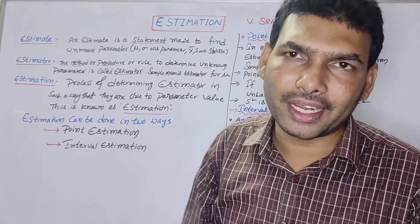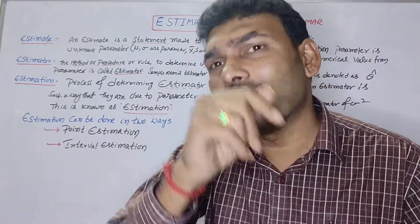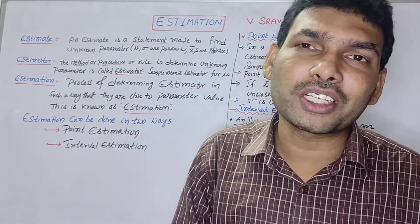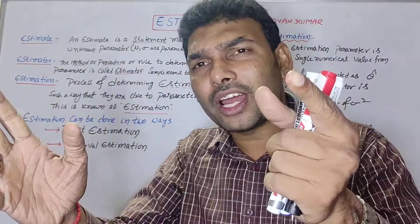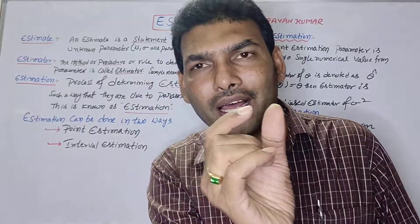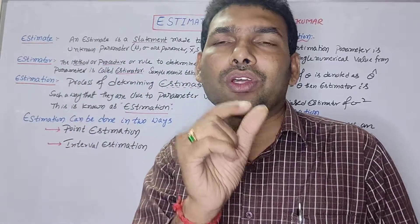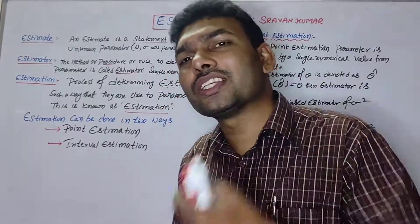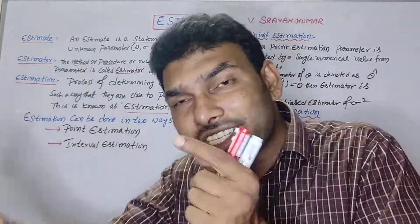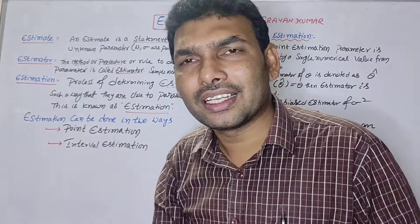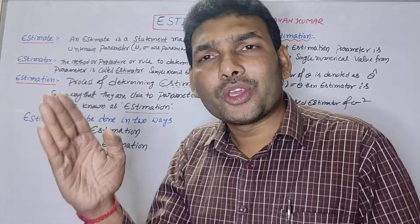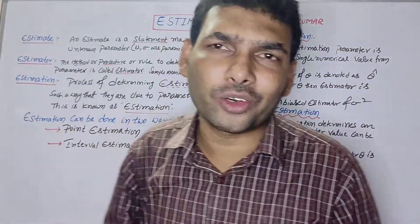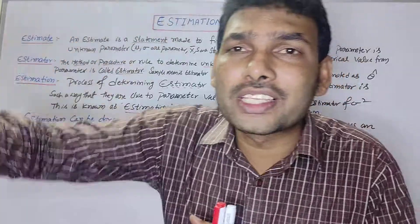There is a drawback to point estimation: it rarely coincides with the actual value. When you guess a single value like 50, it is rarely exact. However, interval estimation has more chance to coincide with the actual value, because there are more chances to include the correct value within a range.